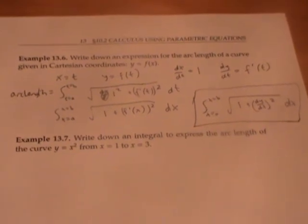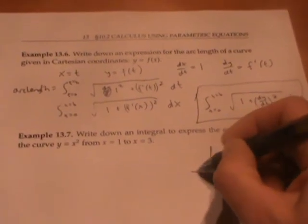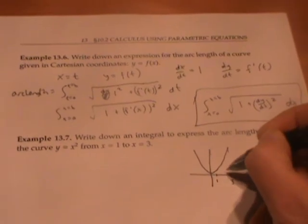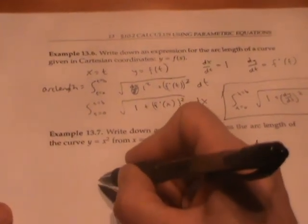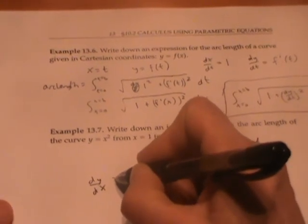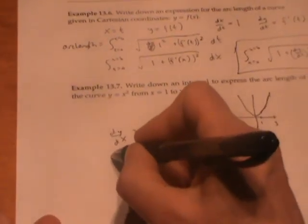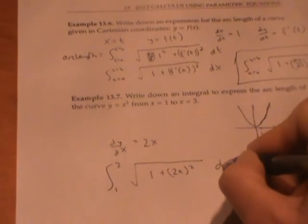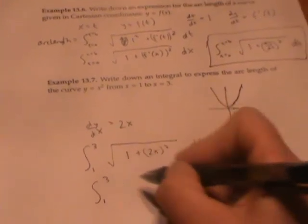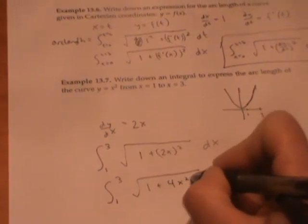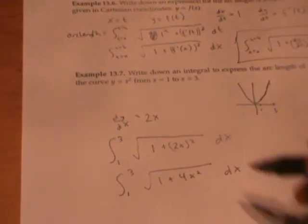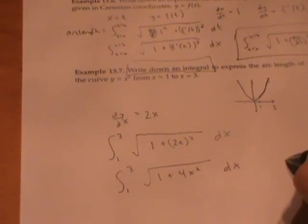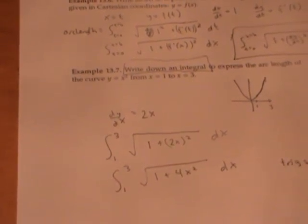Let's use that expression to write down an integral to express the arc length of this parabola from x equals 1 to x equals 3. Since dy/dx is 2x, we're integrating from 1 to 3 of the square root of 1 plus (2x)² dx, or the integral from 1 to 3 of the square root of 1 plus 4x² dx. Fortunately we were just asked to write down the integral, not calculate it, but in fact you do have the techniques to calculate this integral using a trig substitution if you're so inclined.